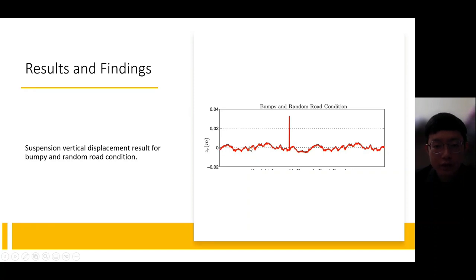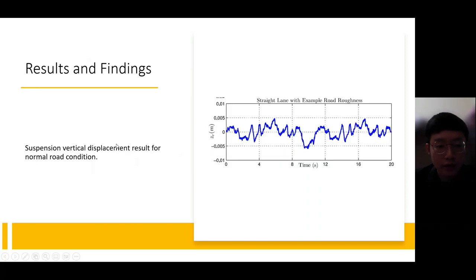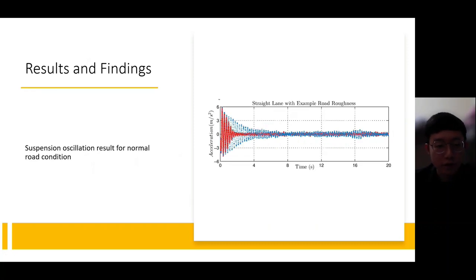The vertical displacement becomes very small, even in bumpy and random road conditions. For the oscillation, the peak value is only 6 and the oscillation returns to normal within a few seconds. For the vertical displacement result for normal road condition, the displacement is very, very small, and this is the same for the oscillation — it only has a peak value of 6 and returns to normal within a few seconds.